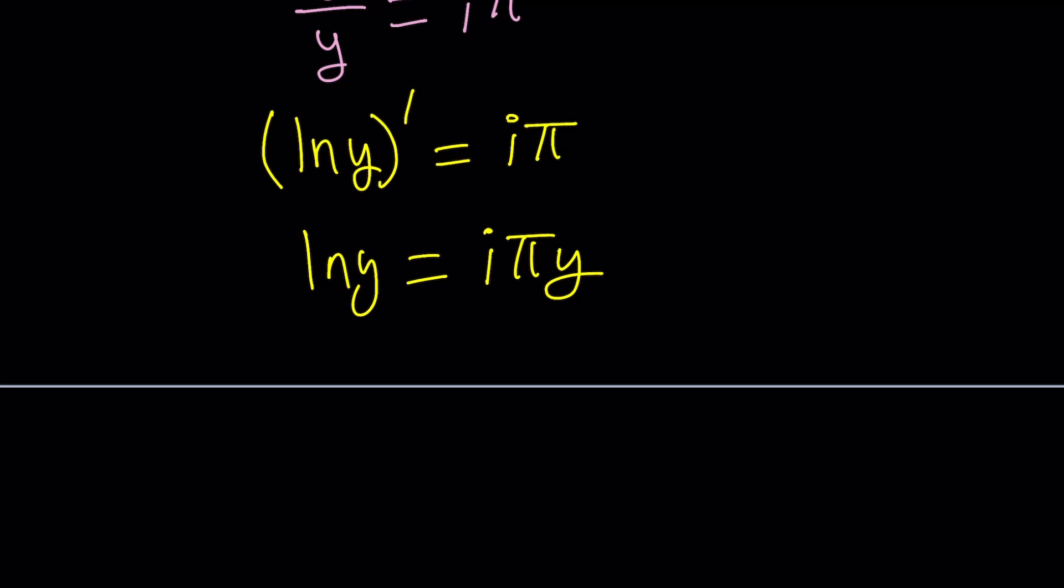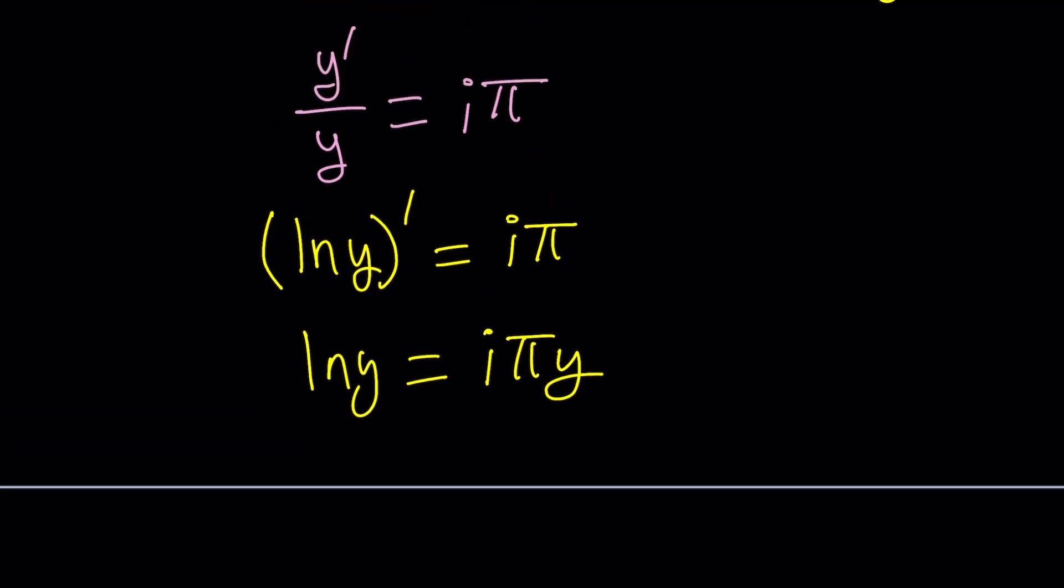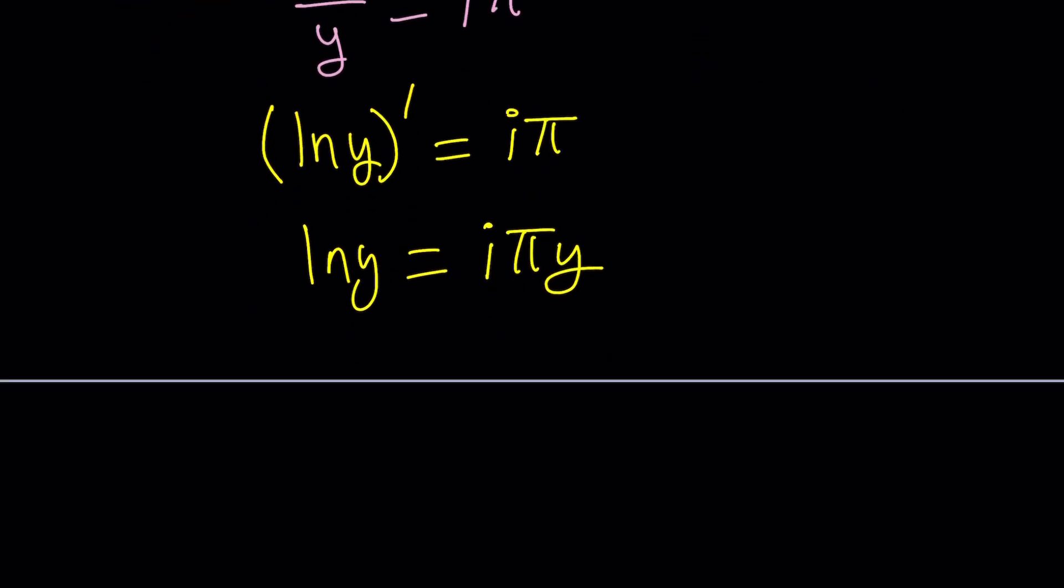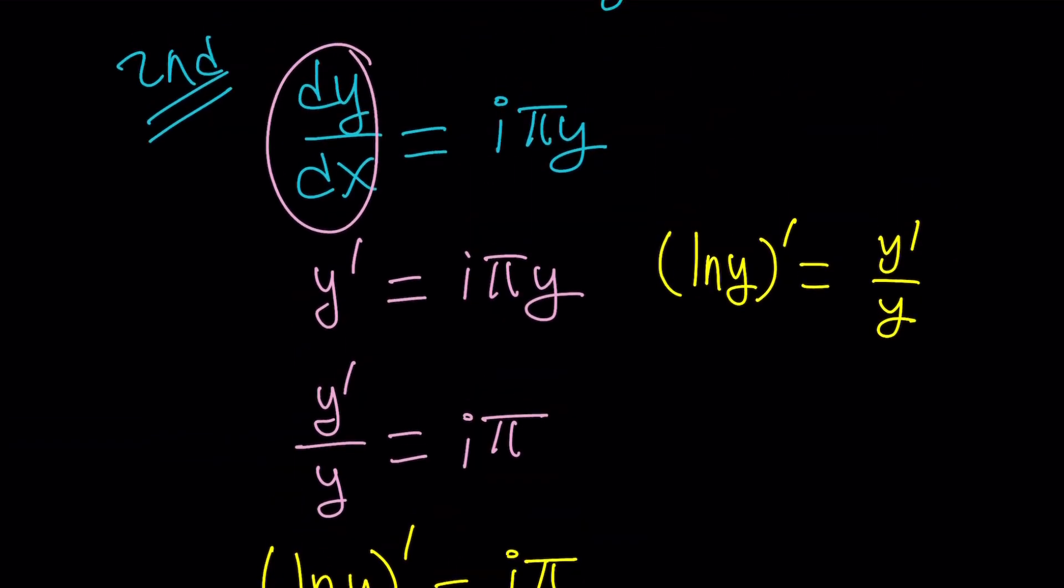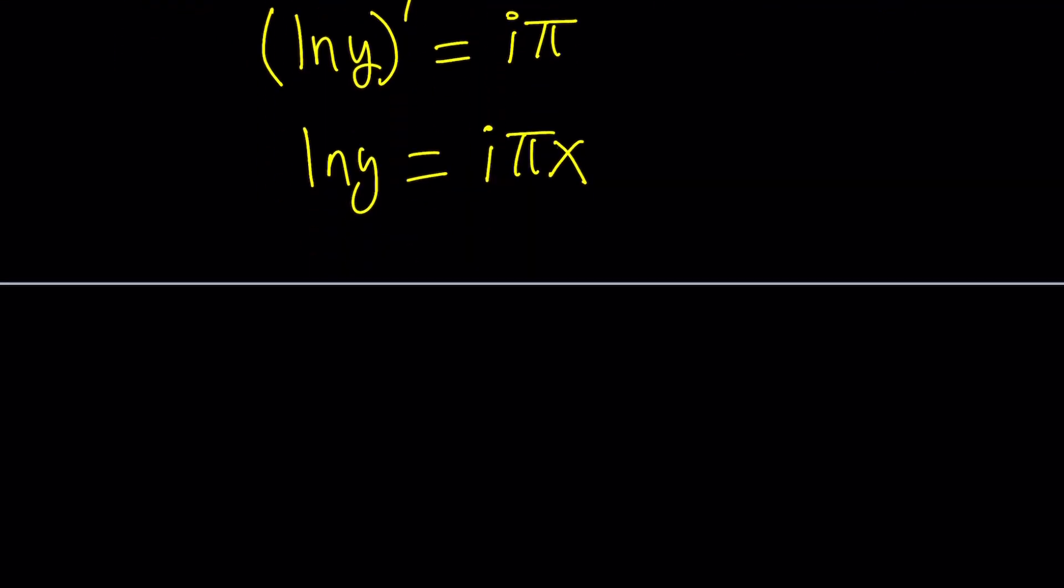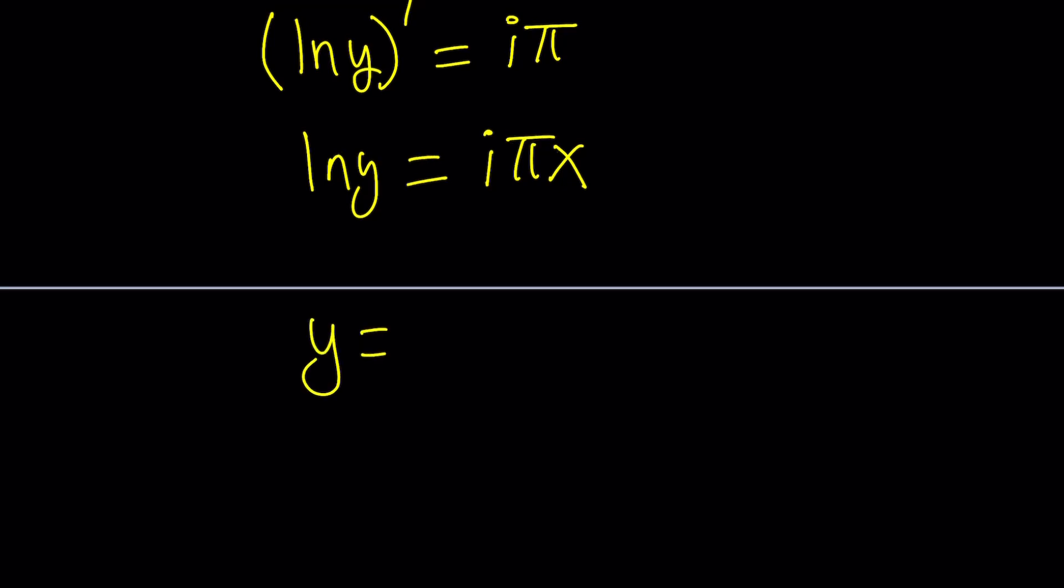Now, this turned into ln y = iπy. Because we are going to, actually, y is a function of x exactly. So, we should do integration with respect to x. And this should be iπx. I'm sorry. It should be not iπy, iπx. And then, we're going to be doing e to the power of both sides. And y from here is just going to be e^(iπx). Wait a minute. What happened to the constant?